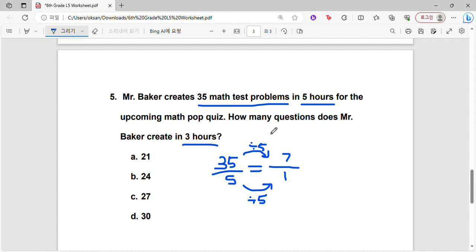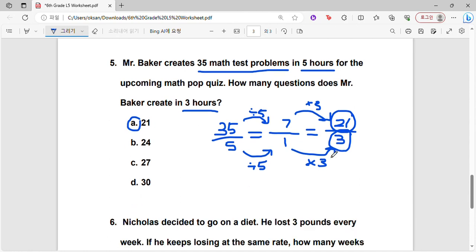So in order to find the amount of questions created in three hours, again we just have to multiply by 3. To give a visual, we have one hour, so we need to find it for three hours. Now we just multiply 3 on the bottom, multiply 3 on the top. 7 times 3 is 21, so in three hours 21 questions are being created. So A is our correct answer.